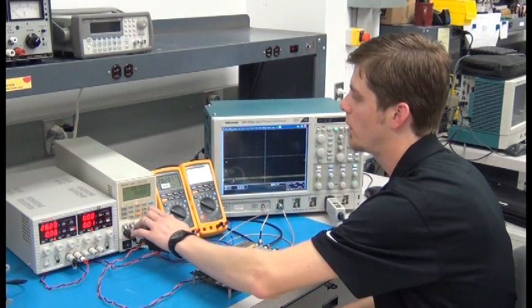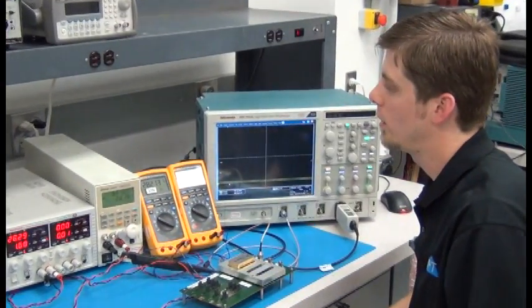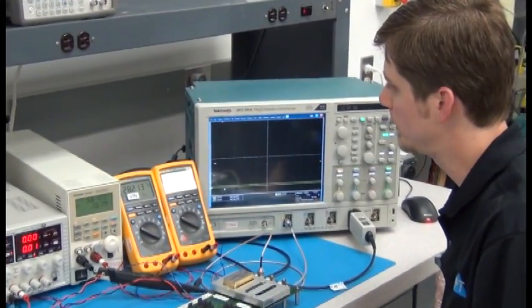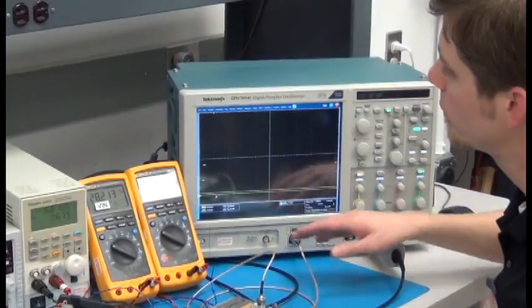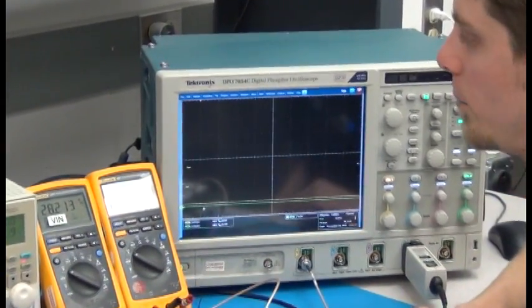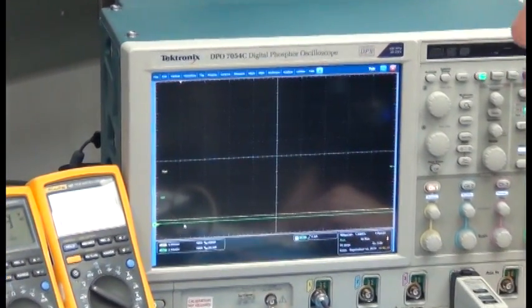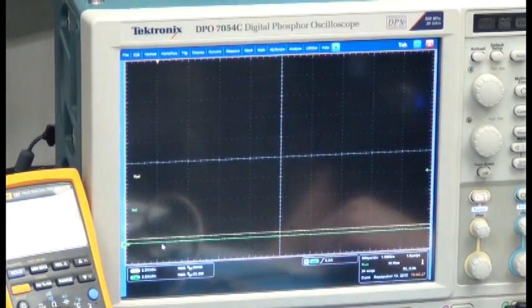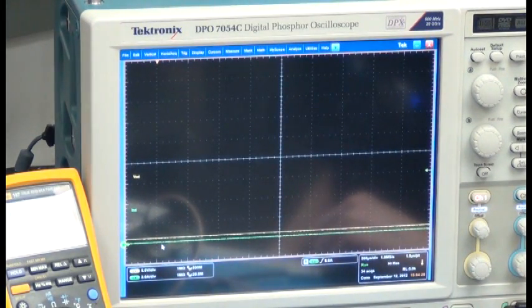So I'm going to turn on this converter and load it with its full load of 2.67 amps. On the screen in yellow, we're going to see the output voltage at 5 volts per division, and in green we're going to see the output current at 2 amps per division.